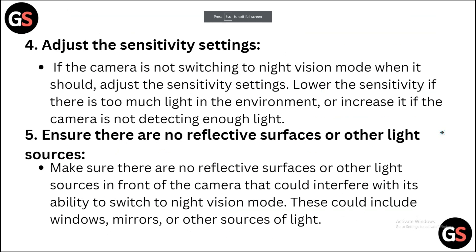Step 4: Adjust the sensitivity settings. If the camera is not switching to night vision mode when it should, adjust the sensitivity settings. Lower the sensitivity if there is too much light in the environment, or increase it if the camera is not detecting enough light.